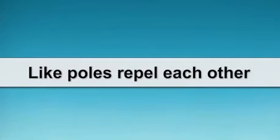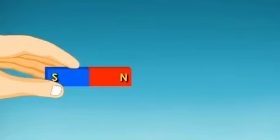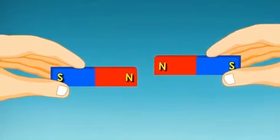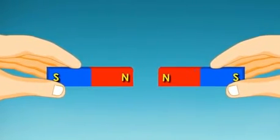Like poles of magnets repel each other. When north pole of one magnet is brought close to north pole of another magnet, then the two poles repel each other.